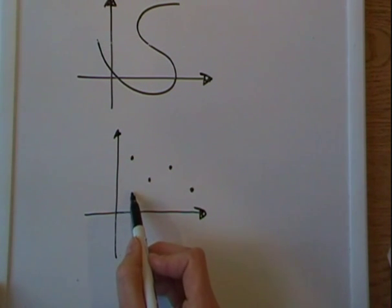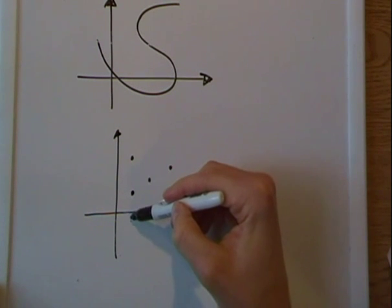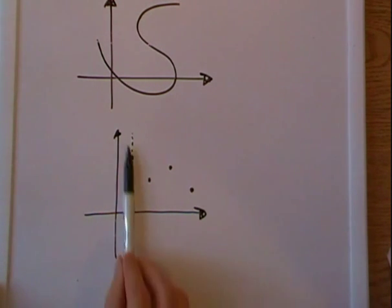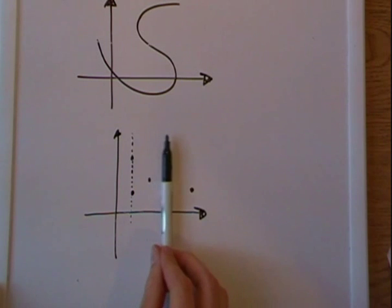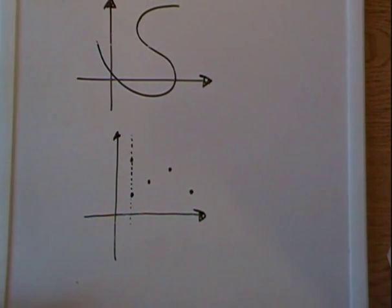If I would have put a point right here, then this is not a function, because these two points touch the pen at the same time. So that's the vertical line test, and it just determines or shows you whether a function, a set of points is a function or not.